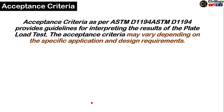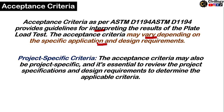For acceptance criteria, ASTM D1194 provides guidelines for interpreting the results of the plate load test. The acceptance criteria may vary depending on the specific application and design requirements. It may also be project-specific, so it is essential to review the project specifications and design requirements to determine the applicable criteria.